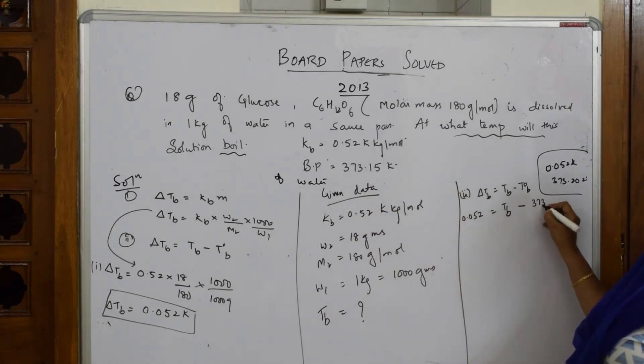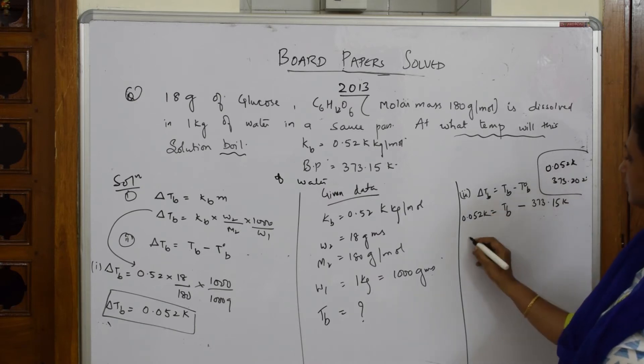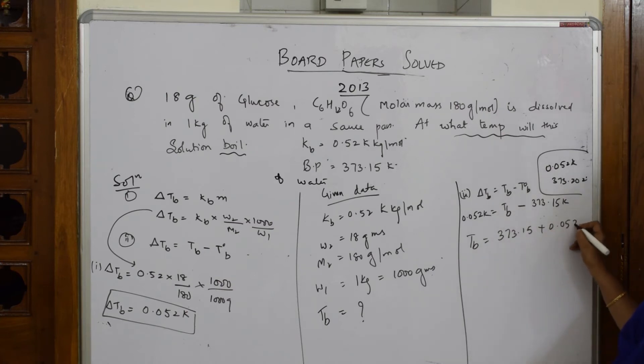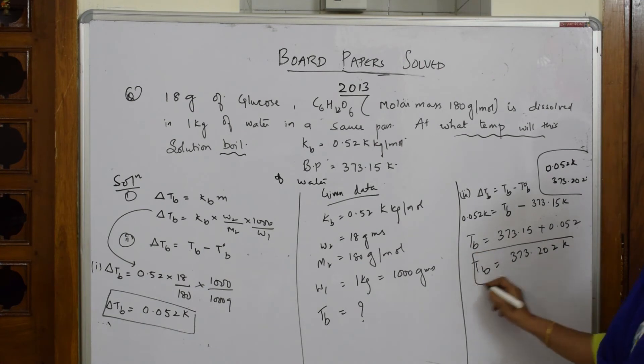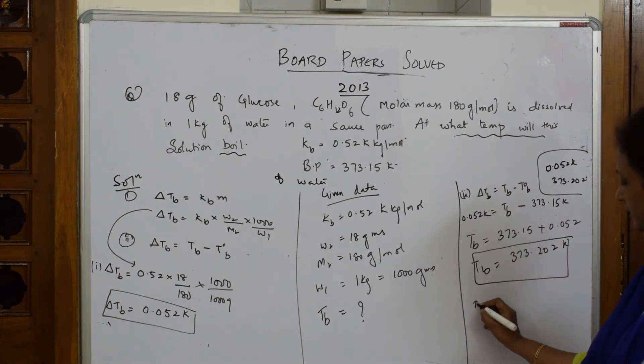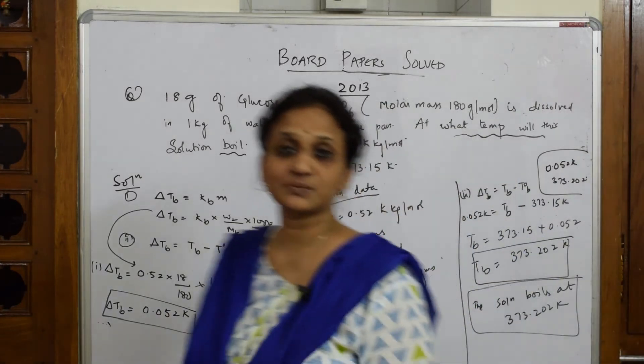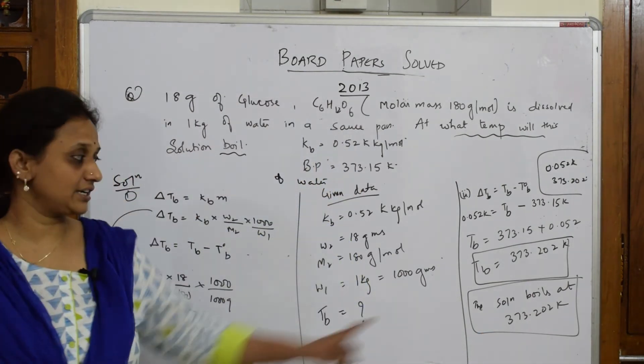Delta Tb I already got, 0.052 = Tb - T0b. T0b is already given, boiling point of pure water, that is 373.15 K. So Tb = 373.15 + 0.052, which equals 373.202 K. So this is the answer. Finally write the answer: the solution boils at 373.202 Kelvin. This is your answer. That also carries marks.